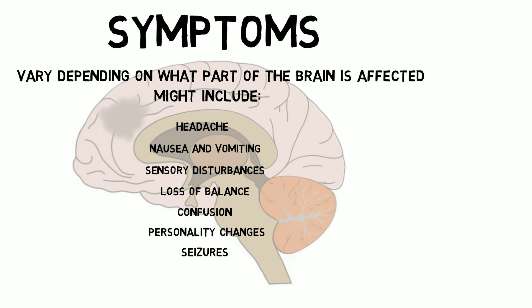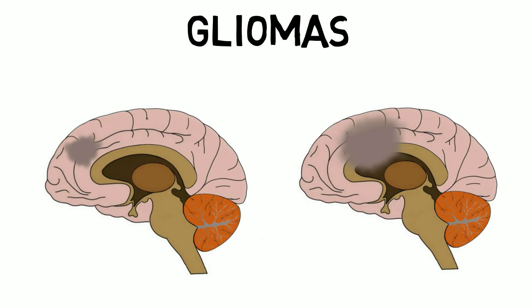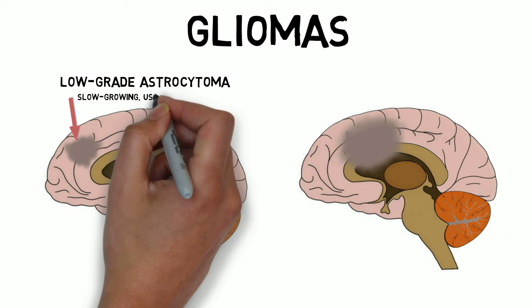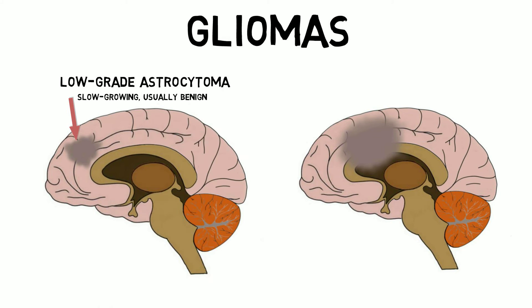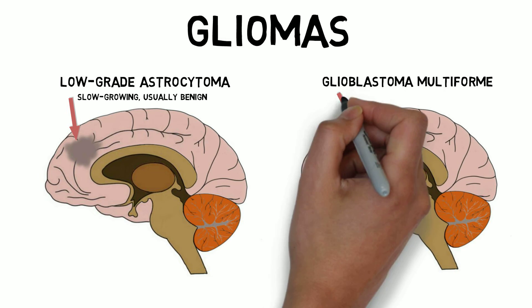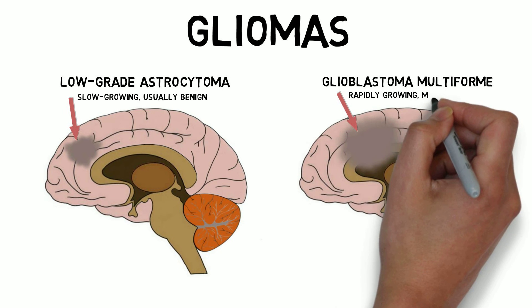There are over 120 different types of brain tumors, so I'll only discuss a few of the more common types here. Gliomas are a category of brain tumor that begins in the glial cells. The most common glioma is astrocytoma, which arises from glial cells called astrocytes. One example of an astrocytoma is low-grade astrocytoma, which indicates a slow-growing tumor that is usually benign. Another example is glioblastoma multiforme, which is a highly malignant tumor that grows rapidly and spreads.